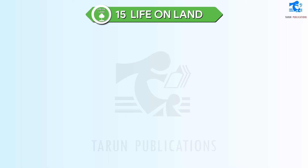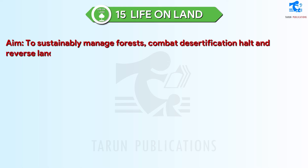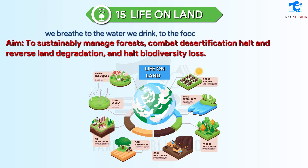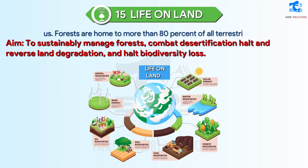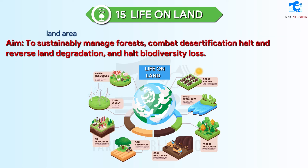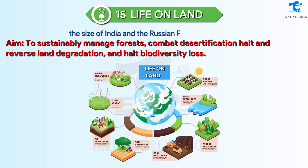SDG 15: Life on Land. Aim: to sustainably manage forests, combat desertification, halt and reverse land degradation, and halt biodiversity loss. Forests cover nearly 31% of our planet's land area. From the air we breathe to the water we drink, to the food we eat, forests sustain us. Forests are home to more than 80% of all terrestrial species of animals, plants and insects. However, biodiversity is declining faster than at any other time in human history. Globally, one-fifth of the Earth's land area — more than 2 billion hectares — are degraded, an area nearly the size of India and the Russian Federation combined.